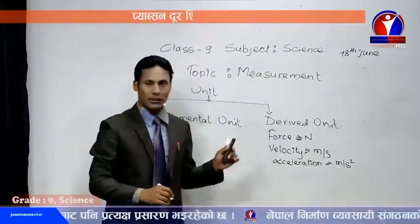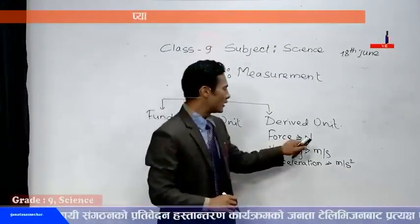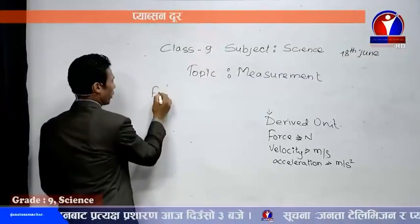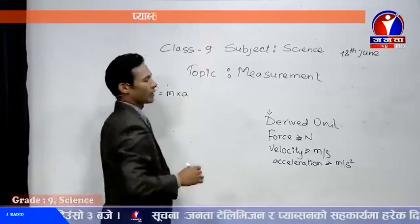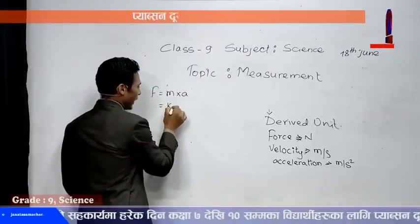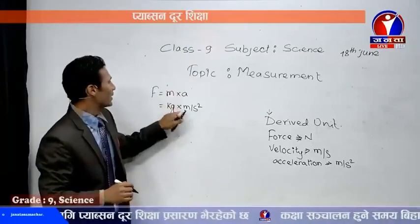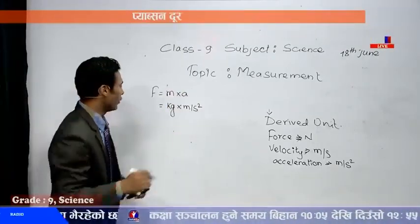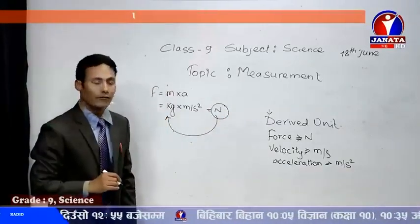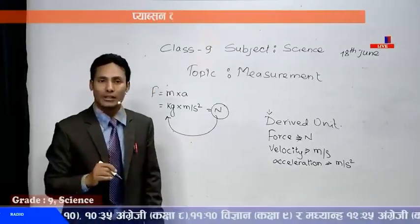Another definition of derived unit: units which can be expressed in terms of fundamental units are called derived units. For example, Newton — the unit of force. Force equals mass into acceleration. The unit of mass is kg and the unit of acceleration is meter per second squared. So Newton can be expressed in terms of kg (unit of mass), meter (unit of length), and second (unit of time), which is why Newton is called a derived unit.